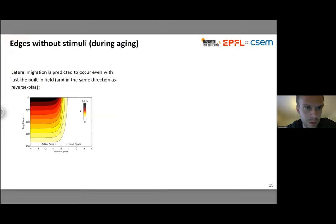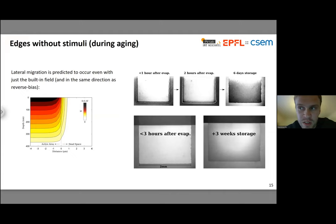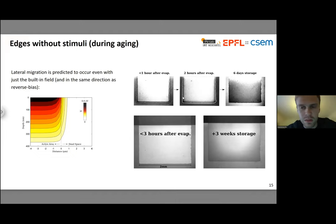In terms of other predictions of this hypothesis, I mentioned that just the built-in field is enough to already drive migration. The question is whether we actually see things happening in the absence of any applied bias — and the answer seems to be yes. The images I'm showing are contrast-adjusted, but very typically when I look at devices that have been in storage — before I've even measured them in our solar simulator — I start to see the development of these patterns. It starts occurring as soon as I evaporate the top electrodes, and you see these patterns of migration happening progressively over time, even when devices are just kept in darkness inside the glove box in inert gas storage. So indeed it seems like the built-in field is enough.